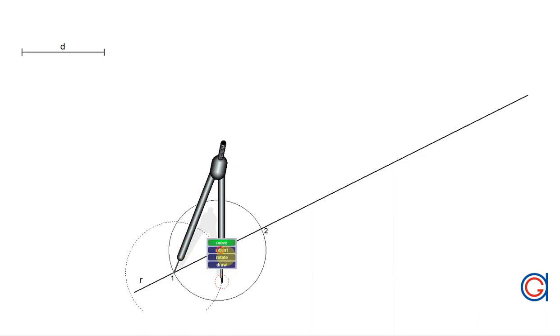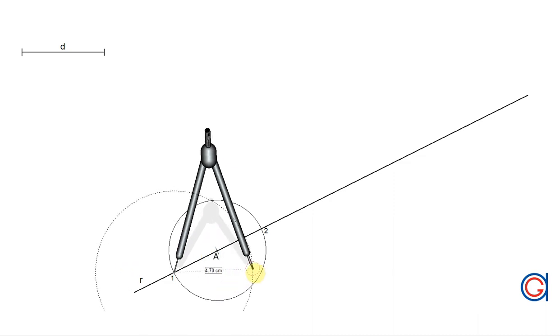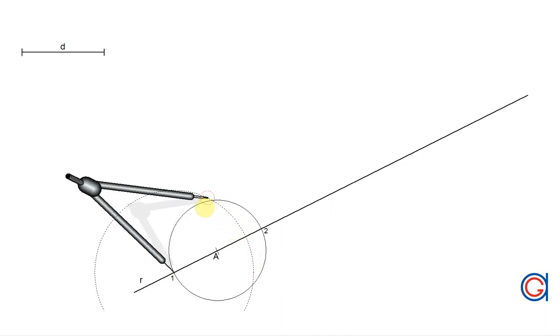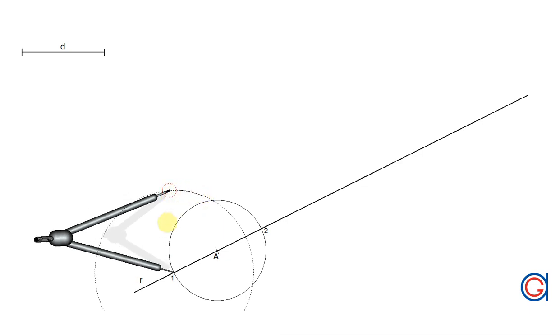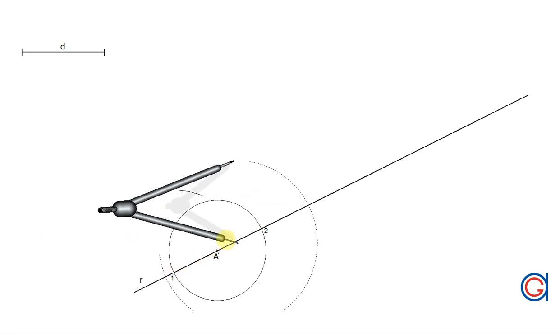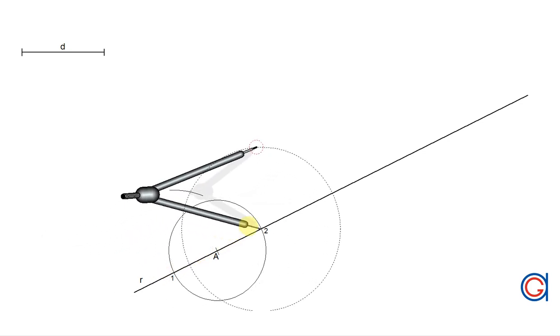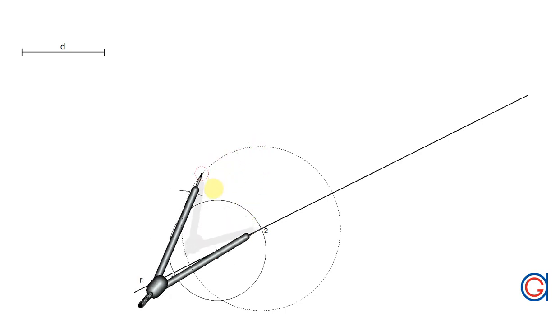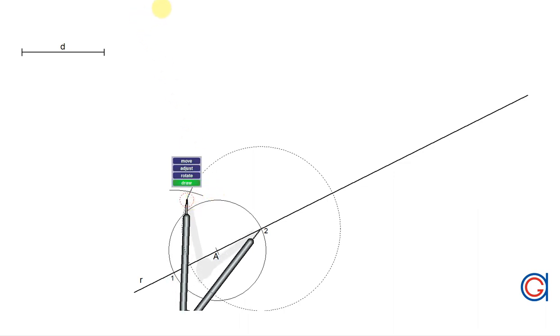Now setting our compass on point 1 and with a radius slightly longer than 1A we're going to draw an arc above the line as can be seen here. With the same radius and setting our compass on point 2 we're going to scribe another arc until it intersects our previously drawn arc at a new point which we will call point 3.